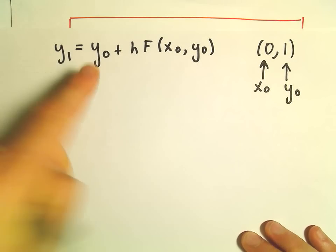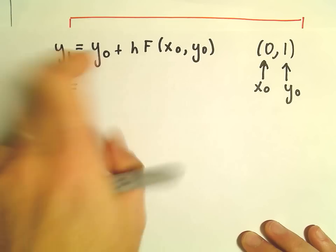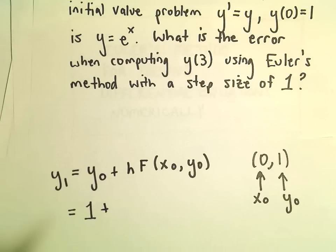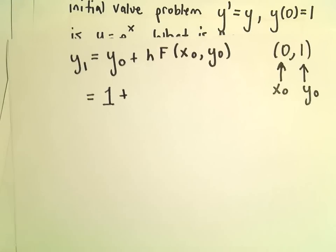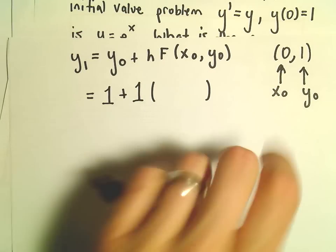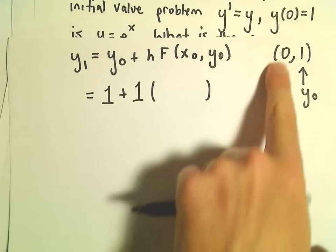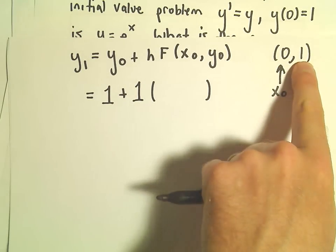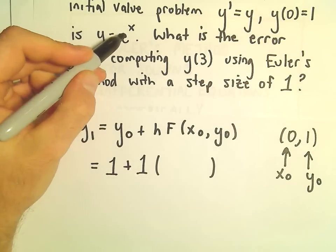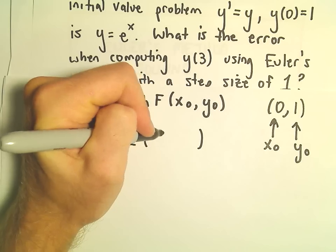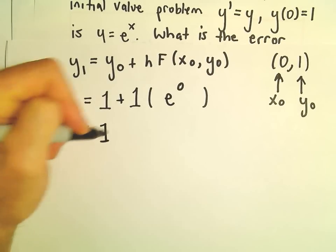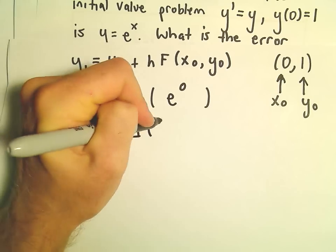And now we're just going to plug everything in. So y₀ equals 1, our step size in this case was also equal to 1, so that's what we plug in for h. And then in our derivative formula, we have to replace all the x's with 0's and all the y's with 1's. But again, our derivative formula here is just e^x. So when we plug it in, we get e^0.